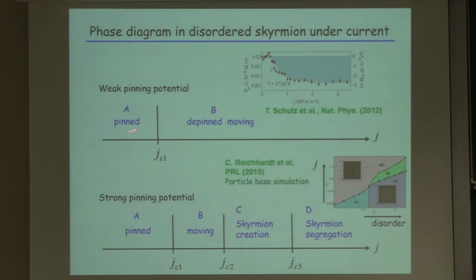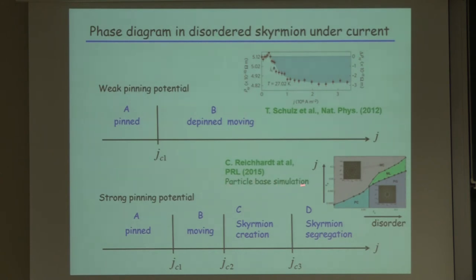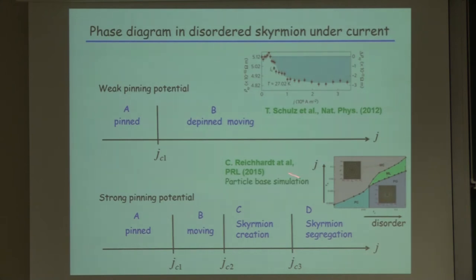The earlier work by the Los Alamos group regarded skyrmions as point particles, assumed an equation of motion for these point particles, and drew a phase diagram. For small disorder, they have a similar result — only one threshold current density. For strong disorder, they have three phases: a pinned glass, a moving liquid, and a moving crystal. But in spin simulations, you can create or destroy skyrmions and emit spin waves between them. This gives regimes C and D, which are missing in the particle-based phase diagram. That is one key message.